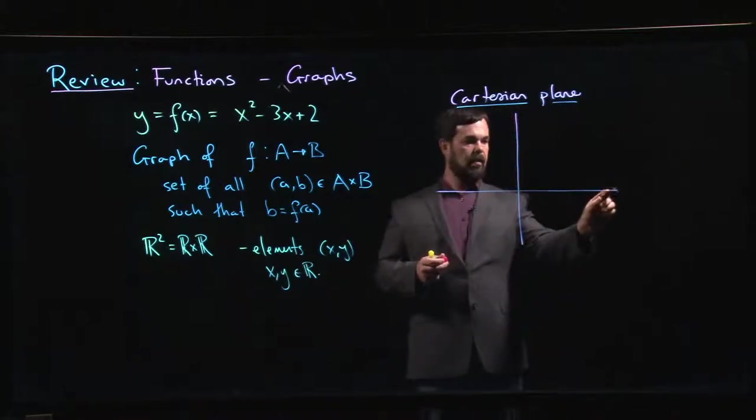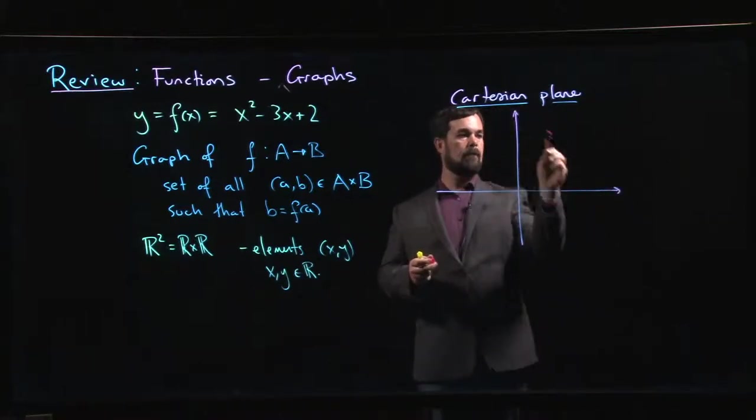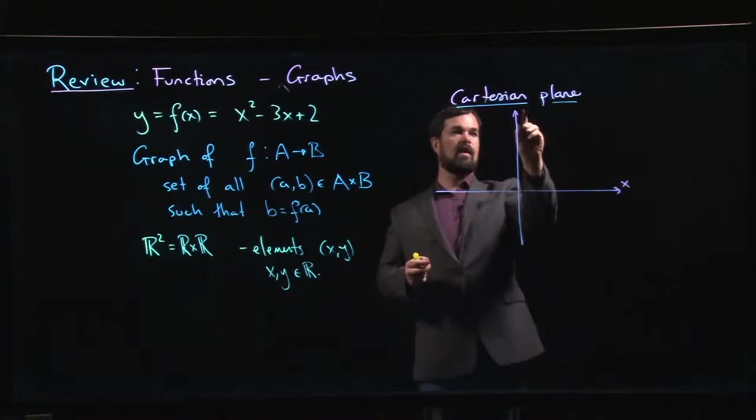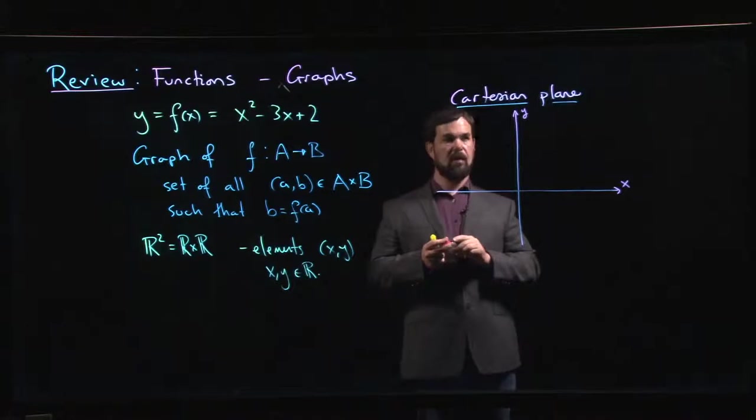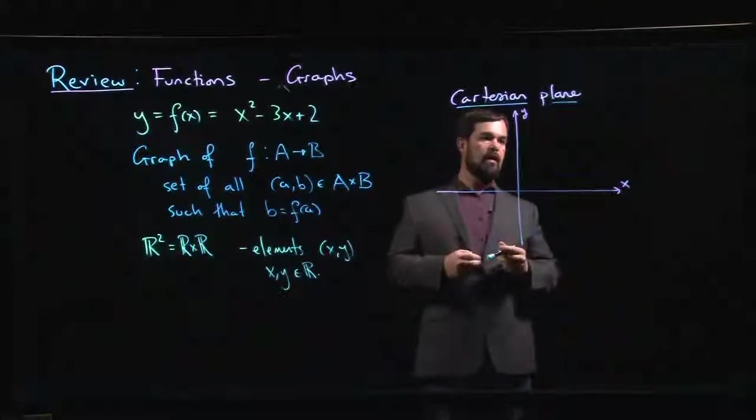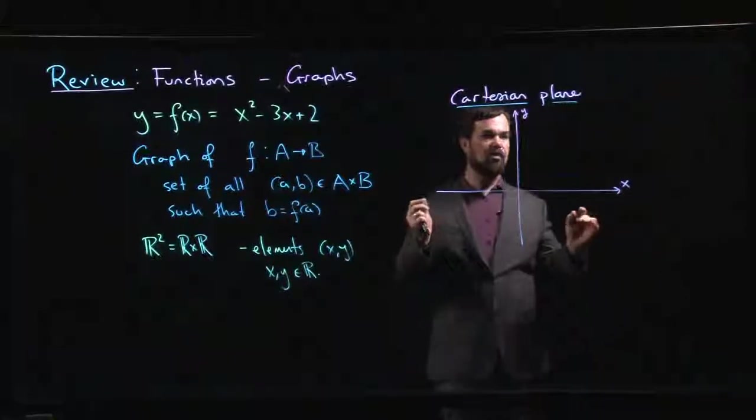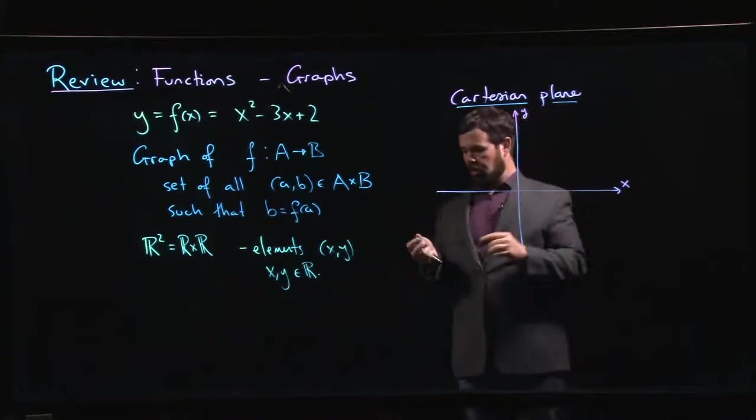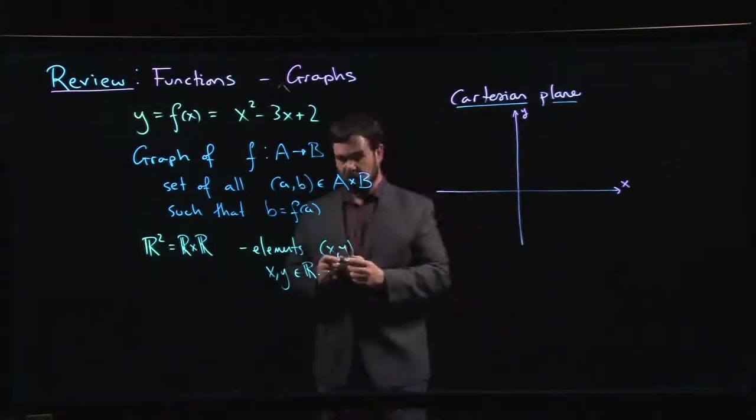The Cartesian plane, this Cartesian coordinate system is this grid system which we all know and love. We draw a pair of axes. We label the horizontal axis as the x axis and label the vertical axis as the y axis.